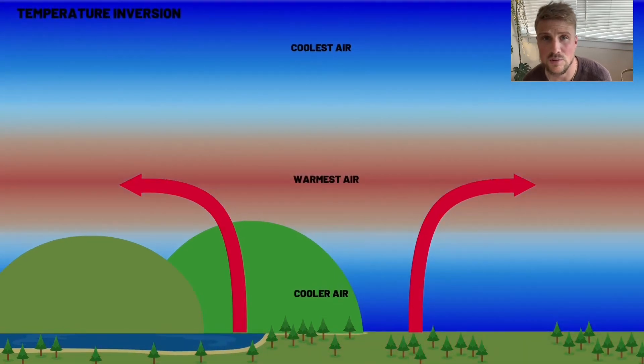Temperature inversions are most frequently caused by rapid radiation cooling of the surface and air near the surface. On cold, clear nights with little wind and clouds, the surface radiates heat quickly into the atmosphere. With no clouds to hold that heat close to the surface and no wind to blow it away horizontally, the warm air rises. This accelerates the cooling of the surface and the air near the surface and causes a shallow layer of cool air with warm air above it.